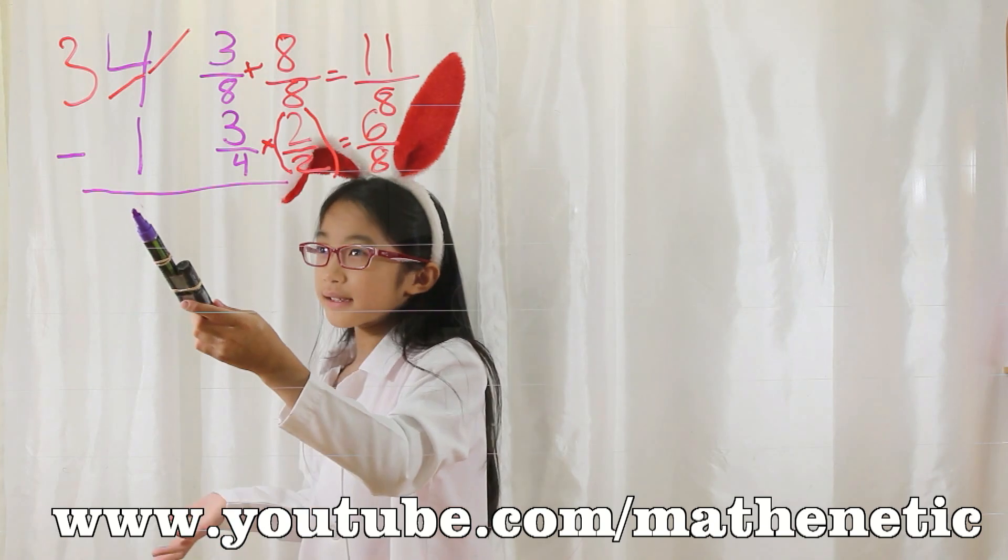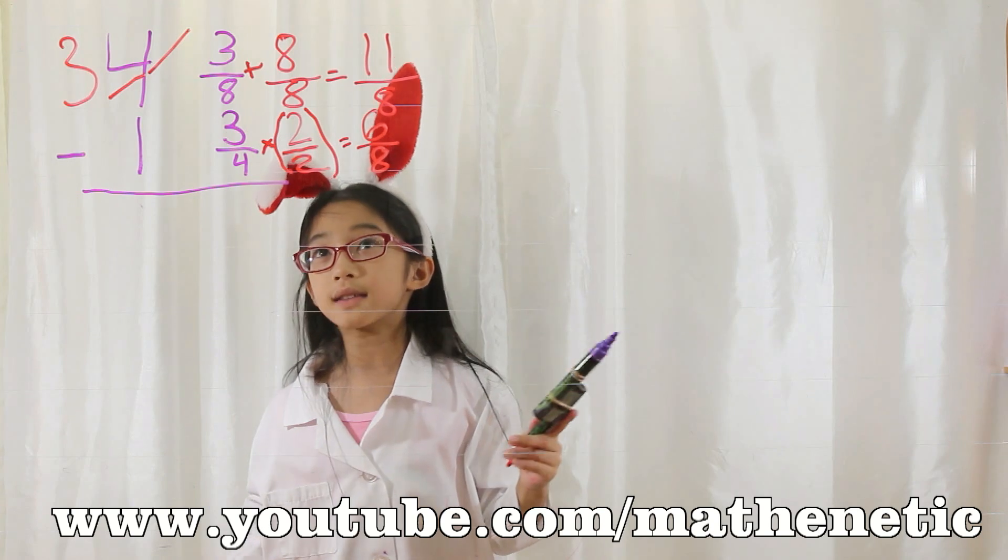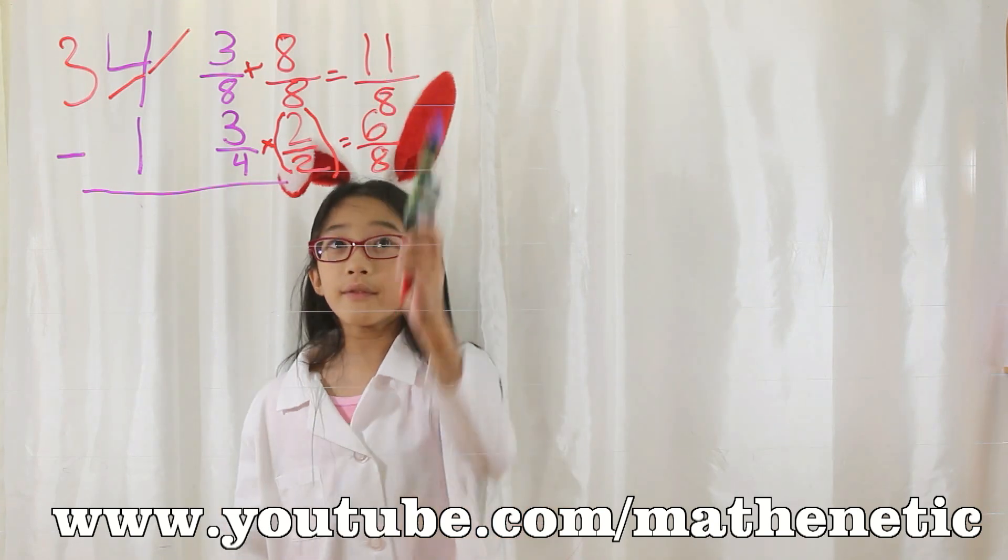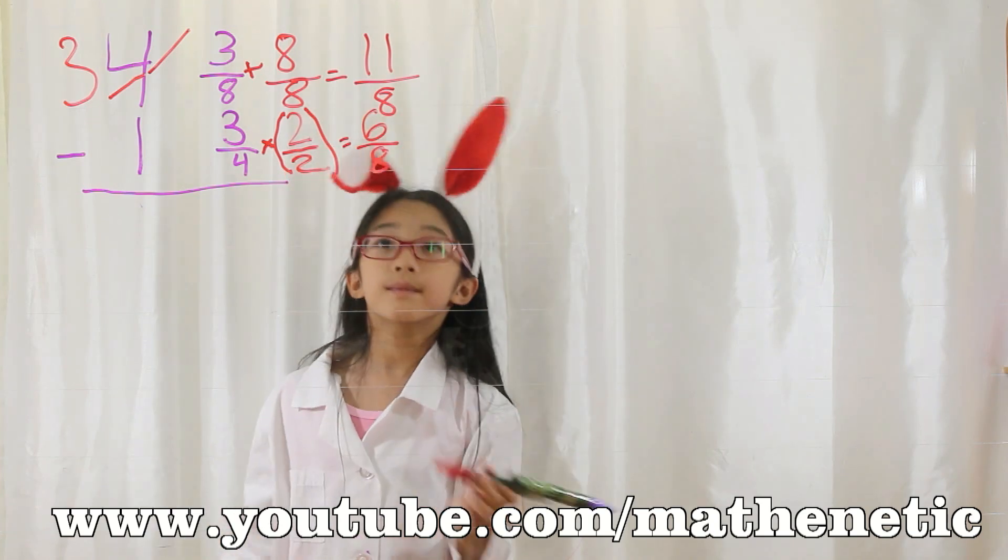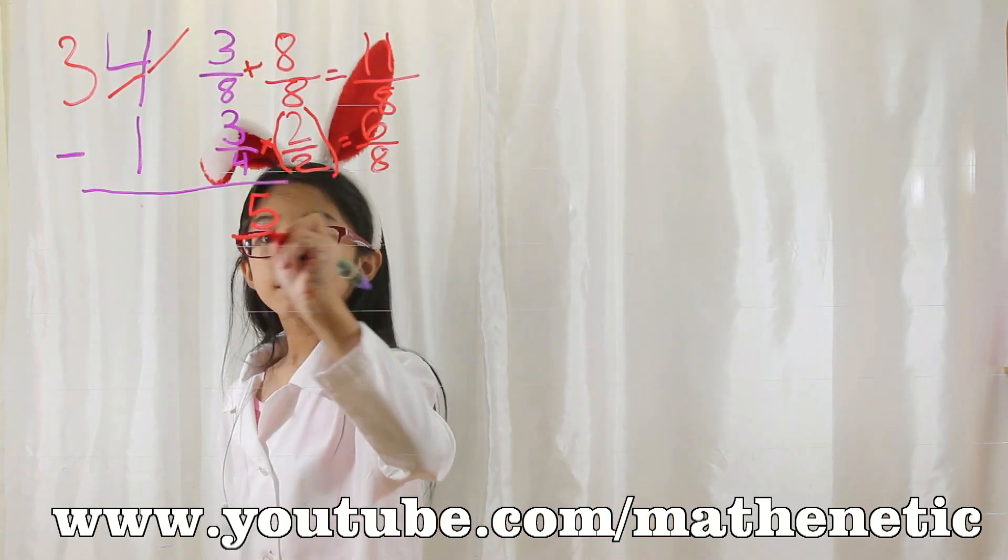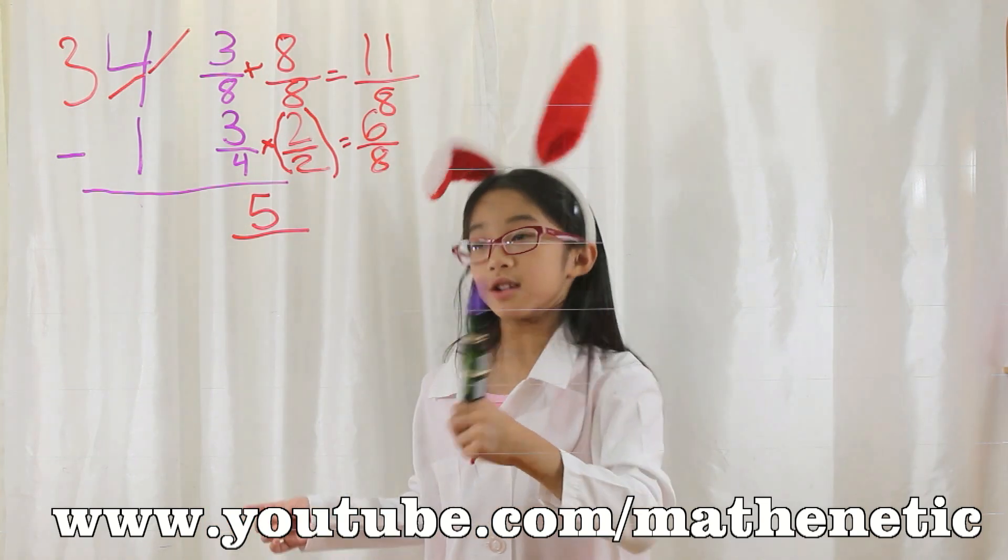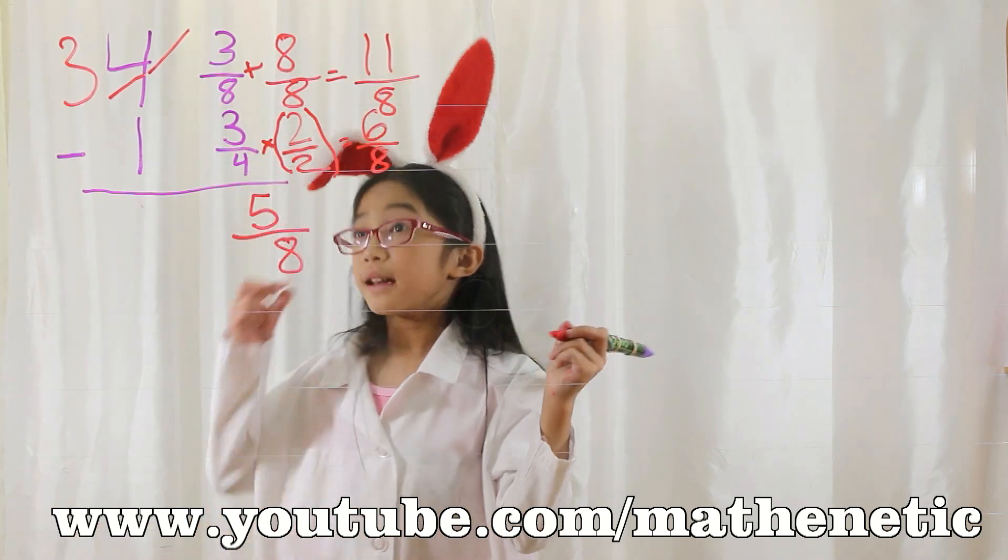But you see the minus sign? These are like the new fractions, so we have to subtract them. We have 11 eighths minus 6 eighths equals something. Let's break it down. 11 minus 6 equals 5. And since they share a common denominator, then our denominator is 8. So we have 5 eighths.